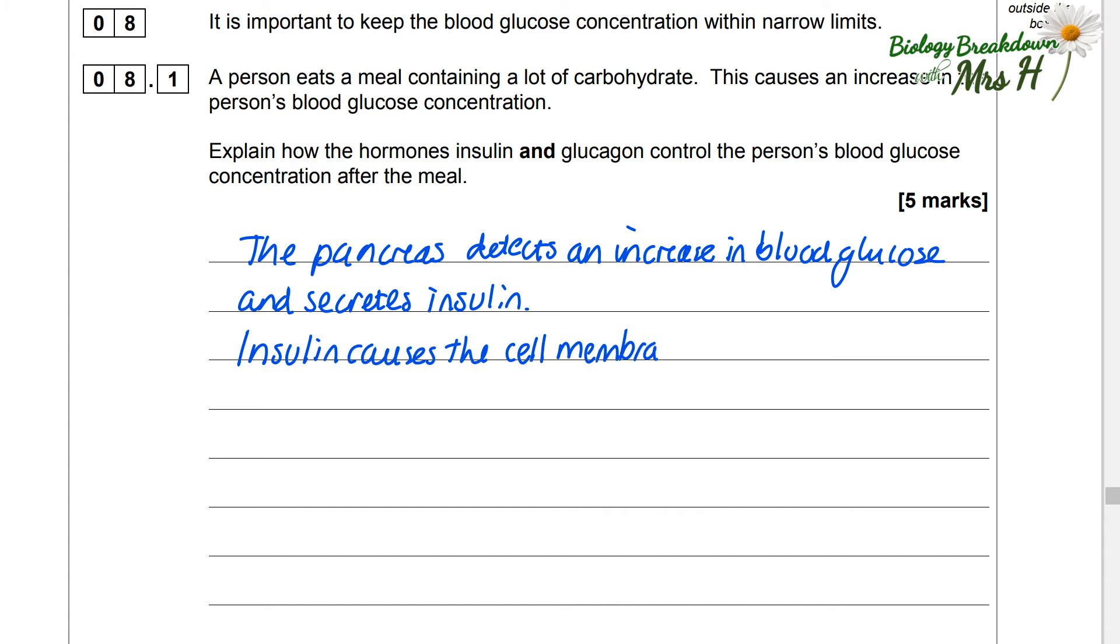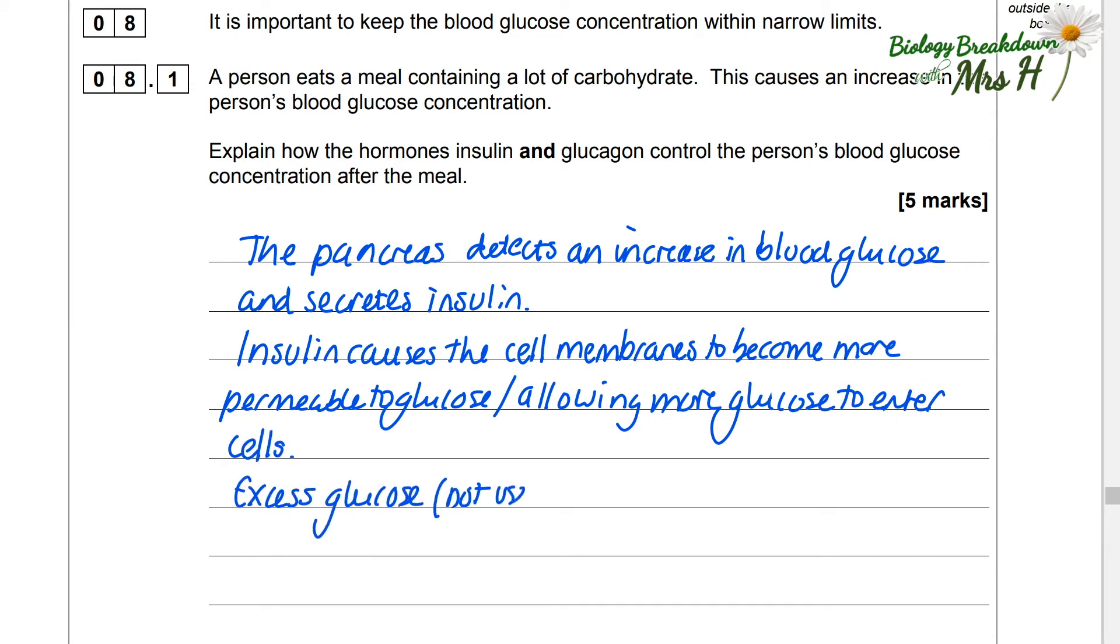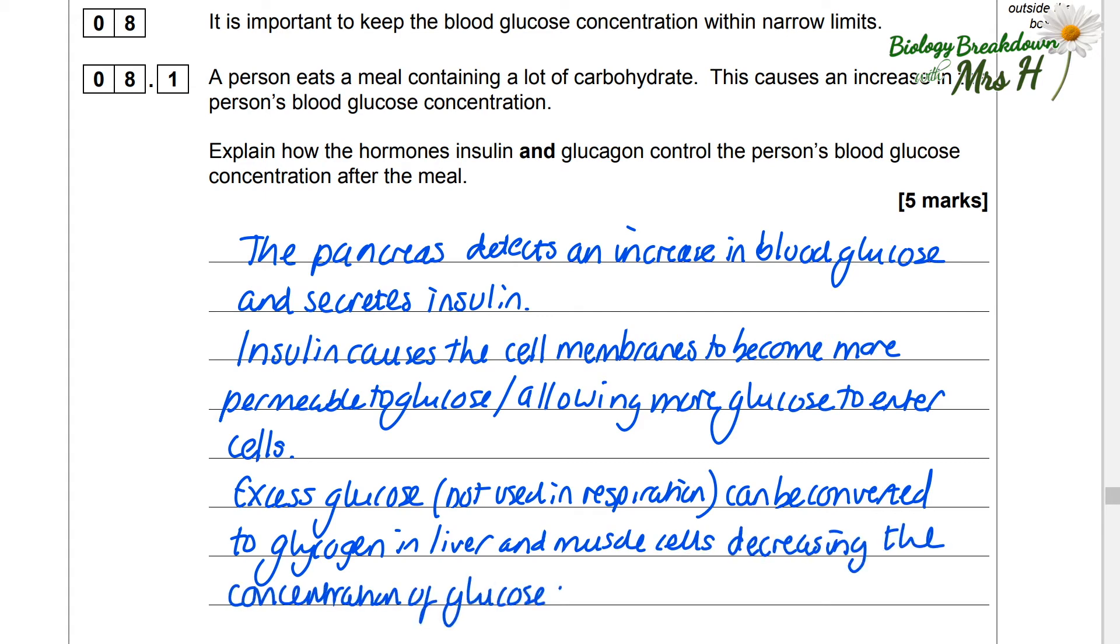Insulin causes the cell membranes to become more permeable to glucose allowing more glucose to enter the cells and therefore come out of the blood. Excess glucose not used in respiration can be converted to glycogen in the liver and the muscle cells decreasing the concentration of glucose in the blood.